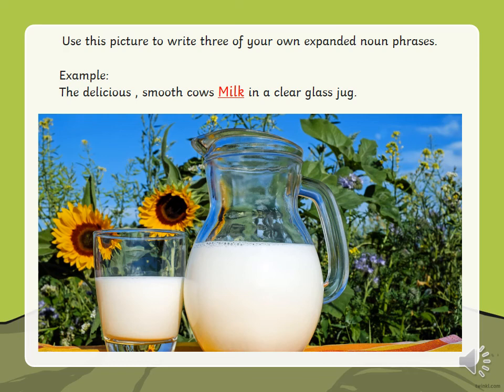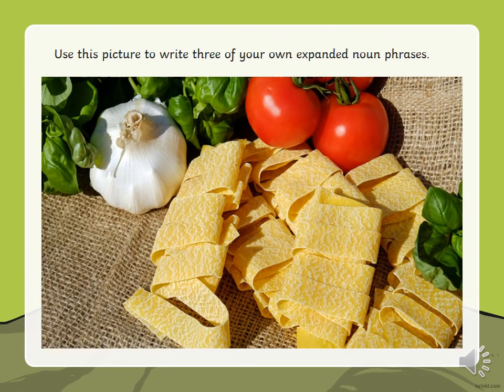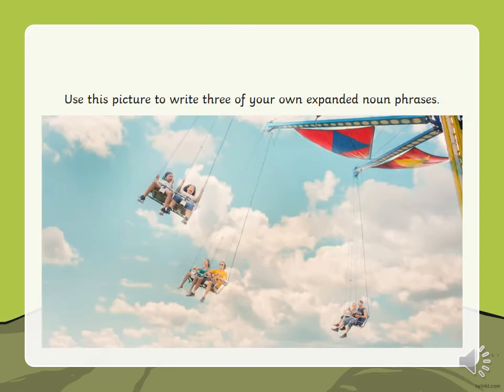Your task: in the next three pictures, you're going to write down three of your own expanded noun phrases about each picture you see. I've done an example for you: the delicious, smooth cow's milk in a clear glass jug — two nouns, two adjectives, and a prepositional phrase. You've got this picture to write three expanded noun phrases about and describe. Take around five minutes for each photo, so you've got 15 minutes. Come up with as many as you can — try three, but if you can do more, that would be great.